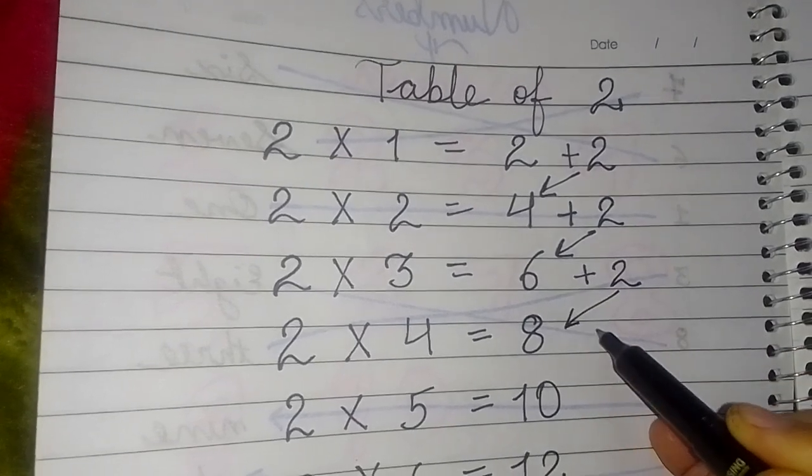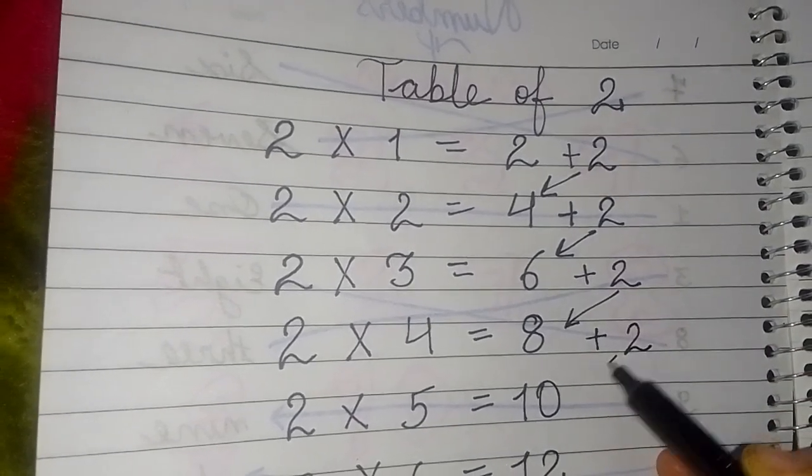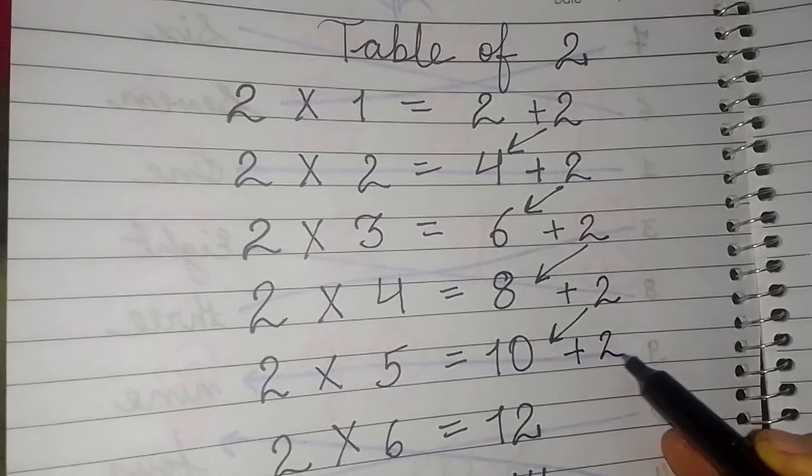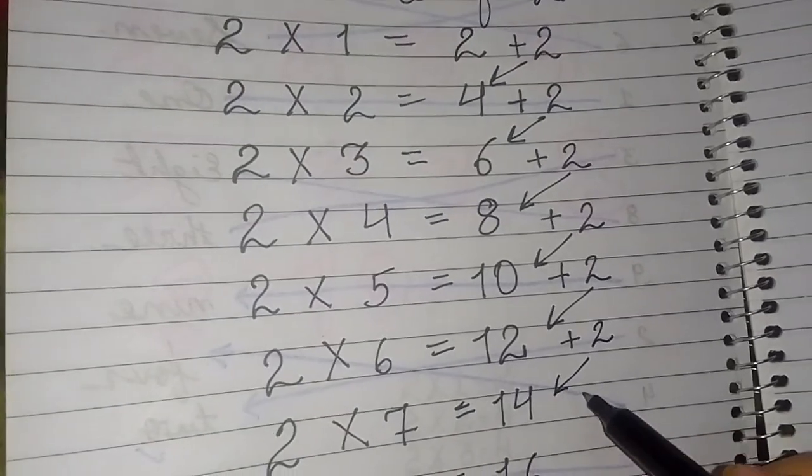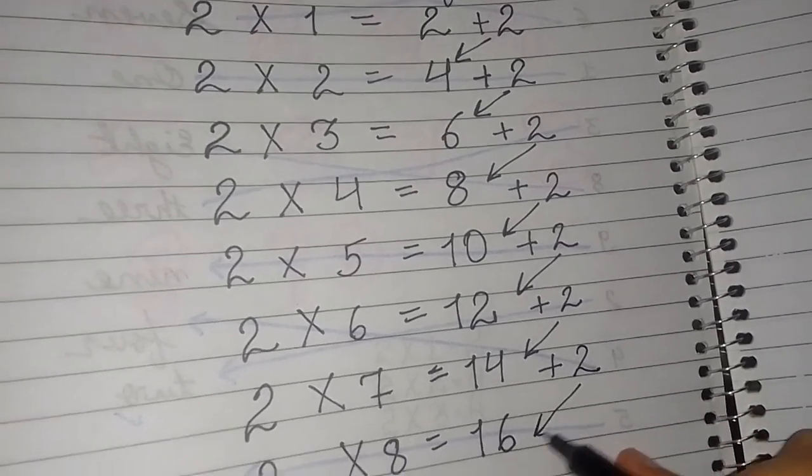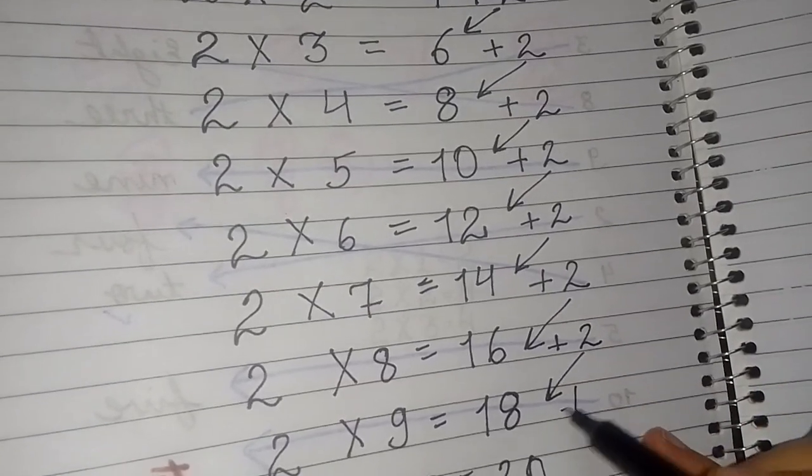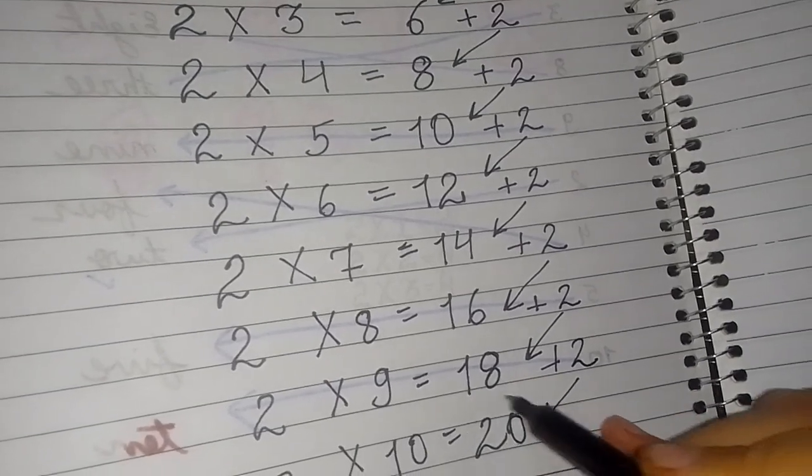if you add 2 to all the numbers, you will get the next number. Like 10 plus 2 equals 12, then 12 plus 2 equals 14, then 14 plus 2 equals 16, and 16 plus 2 equals 18, 18 plus 2 equals 20.